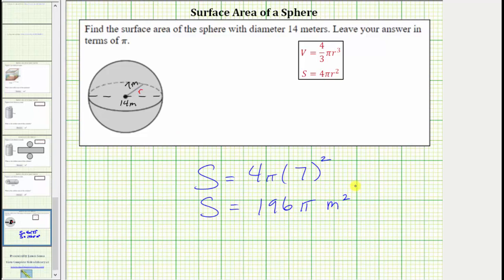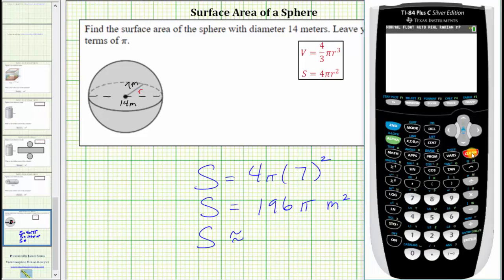So we are told to leave the surface area in terms of pi. Let's also show the surface area as a decimal approximation to two decimal places. To do this we enter 196 and the pi key is second and then the exponent key. Enter. Notice in the thousandths place value there's a 2, which means you round down. The surface area is approximately 615.75 square meters.